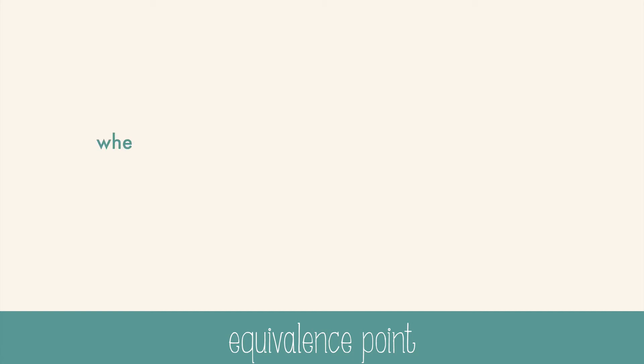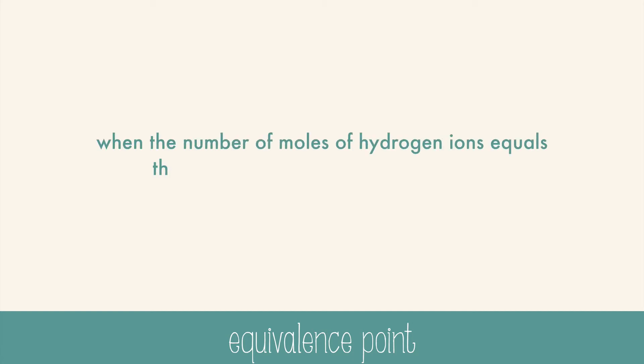When an acid and a base are mixed, the equivalence point is when the number of moles of hydrogen ions equals the number of moles of hydroxide ions. With strong acids and bases reacting, the reaction produces a neutral solution with a pH of 7.